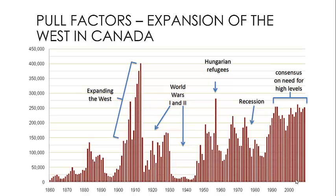The periods of low immigration tend to be times when pull factors aren't as strong. For example, from about 1930 to 1950, the economy wasn't very good — the Great Depression was underway, so there weren't many people coming to Canada because of a lack of job opportunities. Similarly, during the 1970s and late 80s to early 90s, Canada was going through a recession, so there would be less incentive for people to migrate. At other times, there might not be as much immigration because of barriers to travel — for example, during World Wars I and II, we see a dramatic drop-off in the amount of people immigrating to Canada.